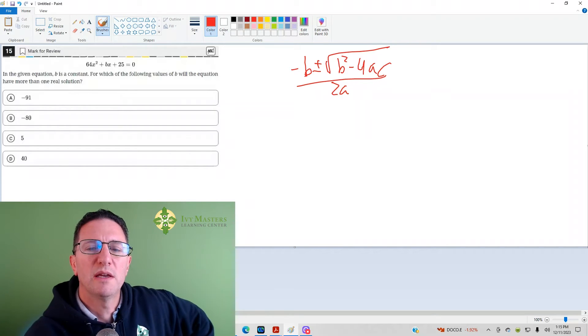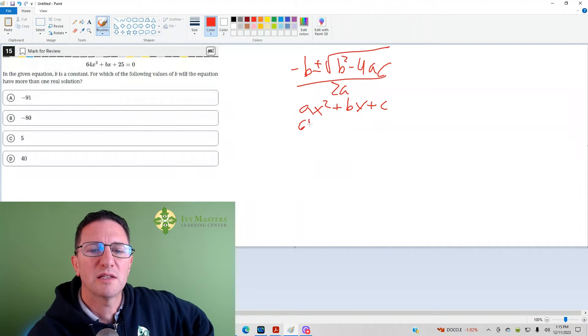The discriminant's helpful because, by the way, when we're talking about all these a's and b's and c's, we're talking about the form ax squared plus bx plus c. We've got 64x squared plus bx plus 25. You can see that your a equals 64, your b equals b, and your c equals 25.